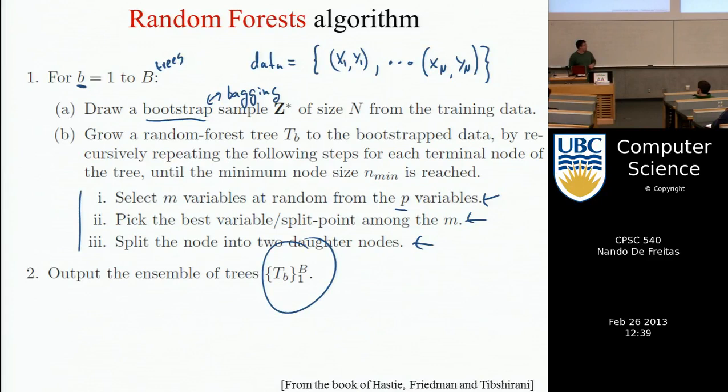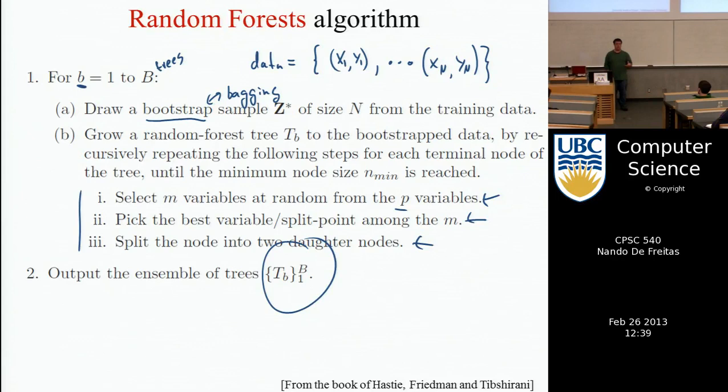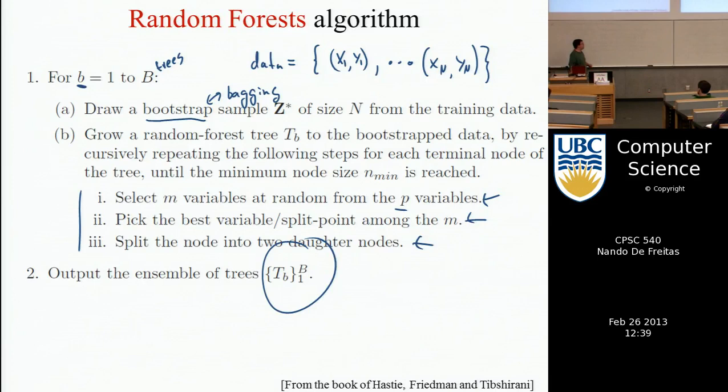At the end of this fitting procedure, you output an ensemble of B trees, each making a prediction. When you want to predict the value for a new data point, you pass it down each tree, each tree makes a prediction, and then you take a majority vote over the trees or average them and take the max. That's a high-level summary of random forests.